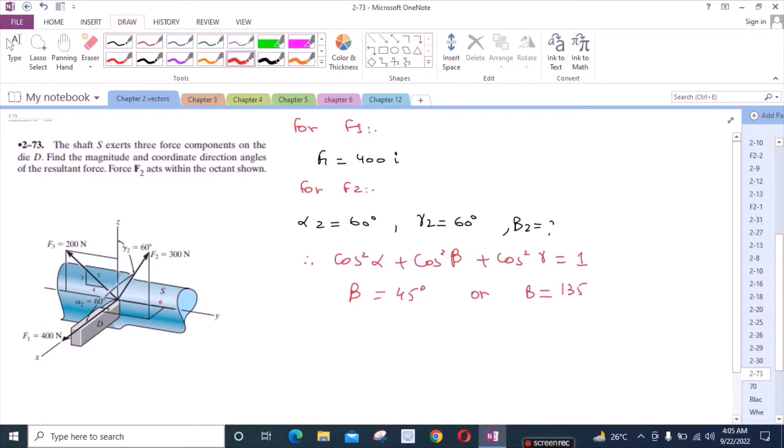Now, from the given figure, the beta is clearly less than 90 degrees. This angle right here which is less than 90 degrees. So beta is 45 degrees. This is the correct choice according to this figure.